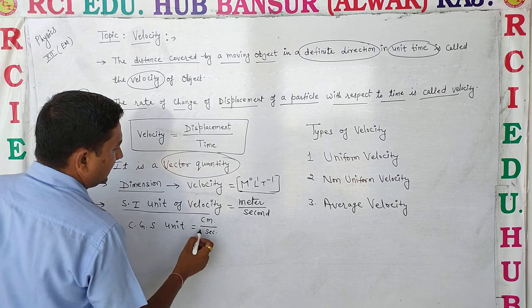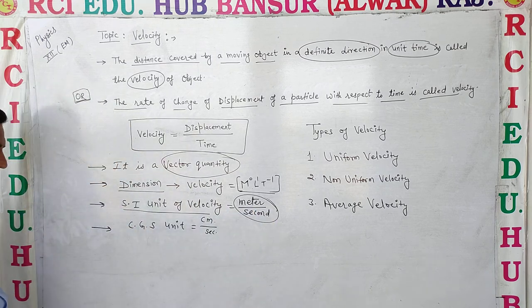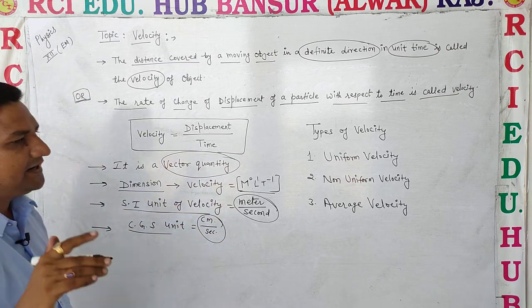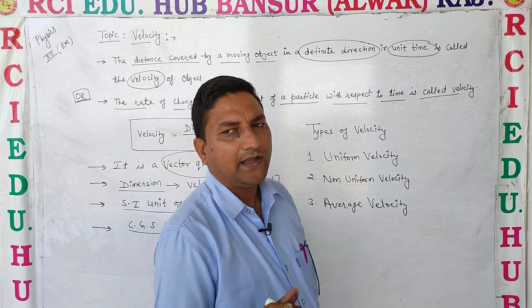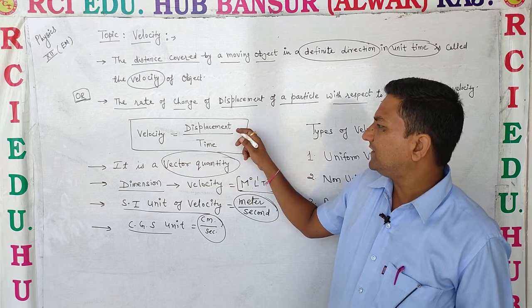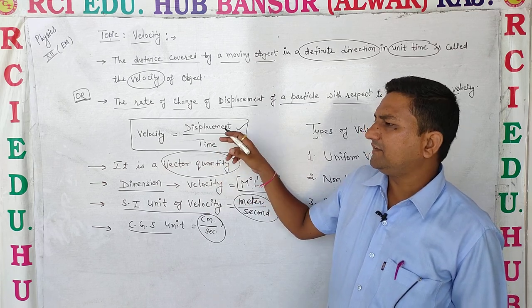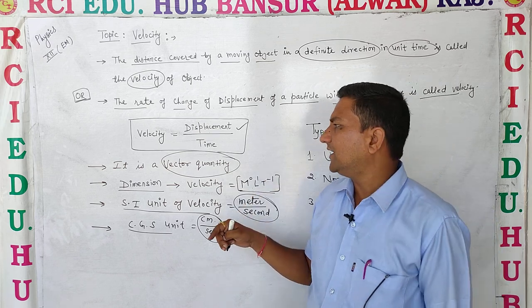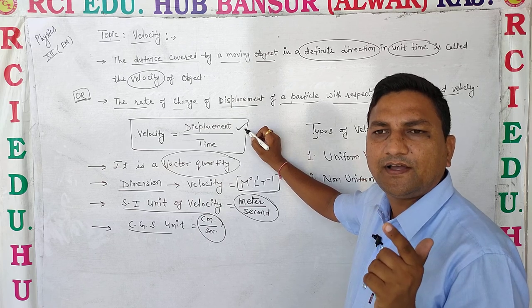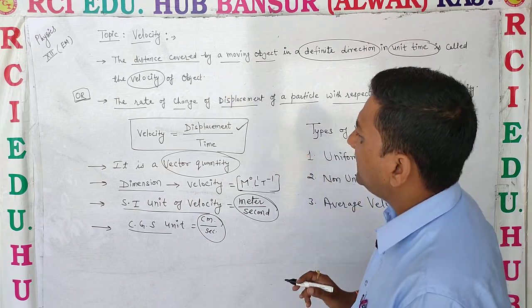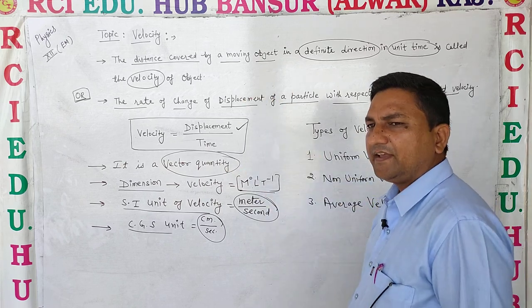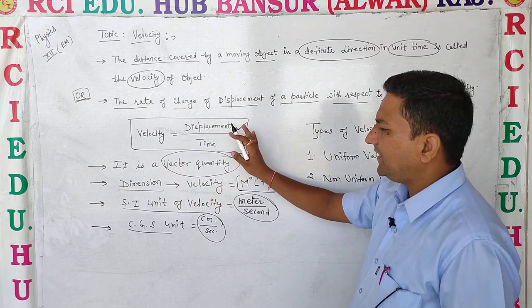The unit of velocity — the unit of velocity is the same as the unit of speed. Speed is a scalar quantity, which means it has no direction, whereas velocity is a vector quantity, which means it has direction.